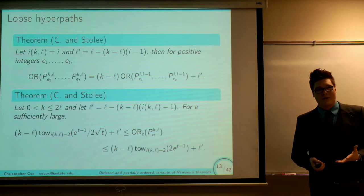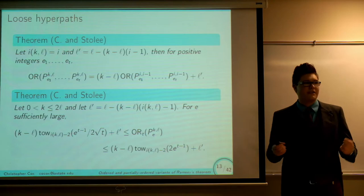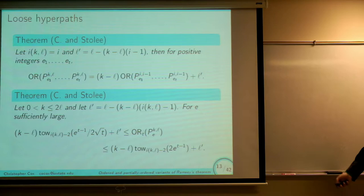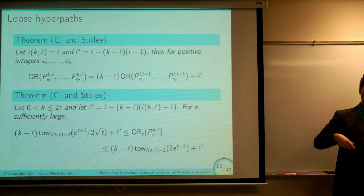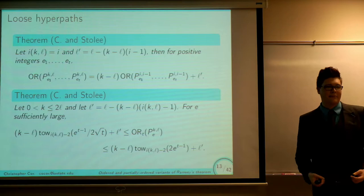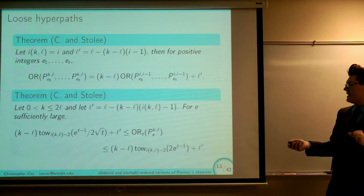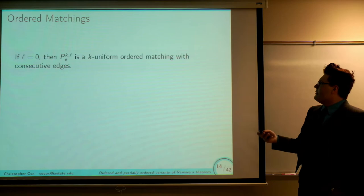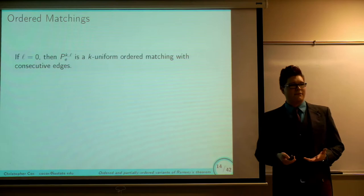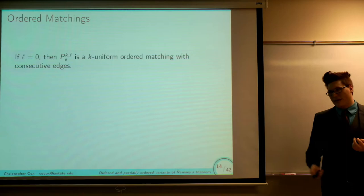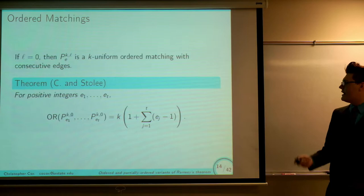For the rest, we apply Moshkovitz-Shapira bounds to get that the ordered Ramsey number of the loose path grows as a tower of height (max degree minus 2) in terms of edges and (max degree minus 1) in terms of colors. We also have a direct proof using a poset-theoretic construction that effectively reproves the Moshkovitz-Shapira results, though pinning down the exact size of the poset is difficult and closely related to Dilworth's problem. If L equals 0, we're really looking at a matching with edges placed consecutively — our poset proof lets us pin down this ordered Ramsey number as well. I'd like to transition into talking about hypermatchings.